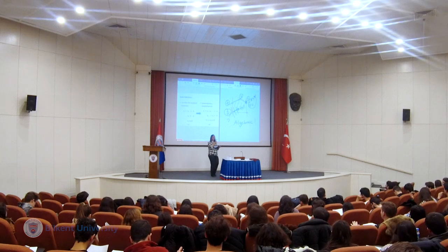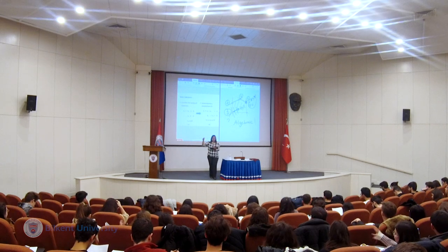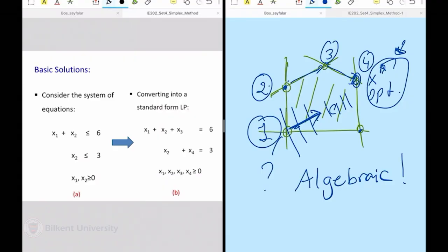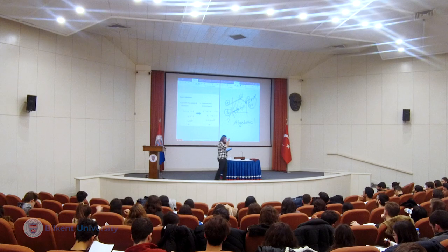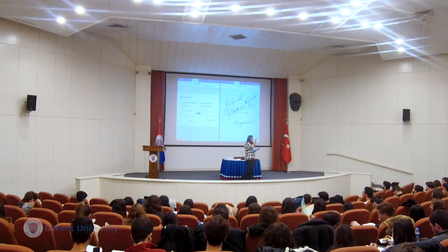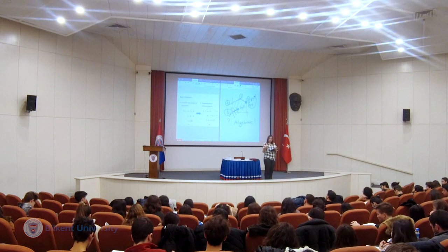Everything was great in the graphical solution. You could see the corner points, you could see the improving direction, you could find the optimal solution very easily. Now you won't have the luxury of seeing everything in a graph — you won't be able to visualize the corner points and move to them. That's our problem.